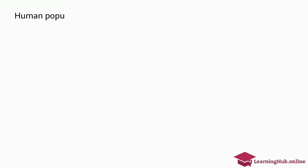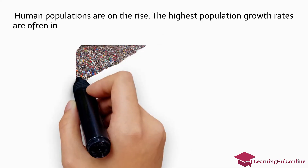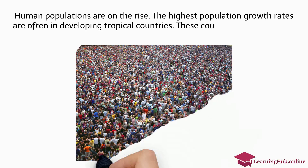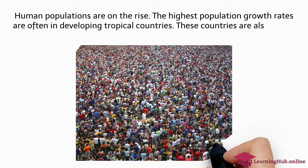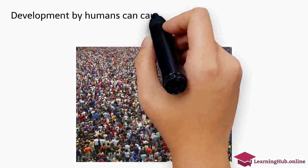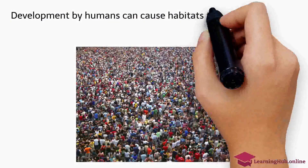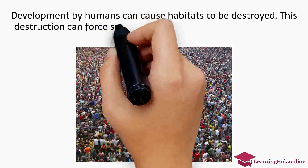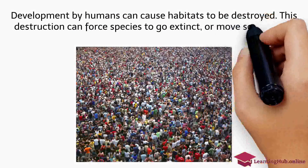Overpopulation. Human populations are on the rise. The highest population growth rates are often in developing tropical countries. These countries are also where biodiversity is highest. Development by humans can cause habitats to be destroyed. This destruction can force species to go extinct or move somewhere else.